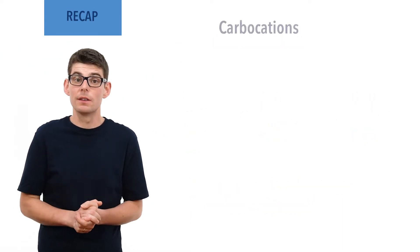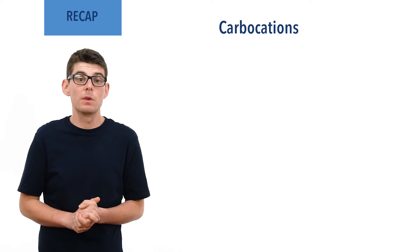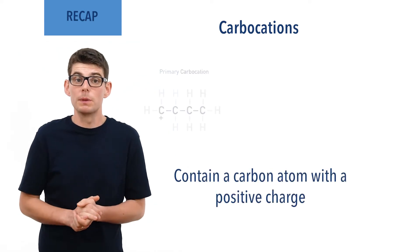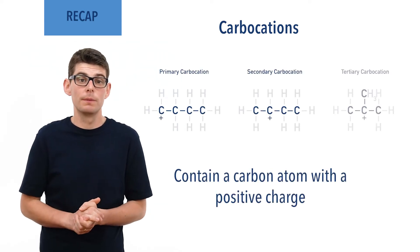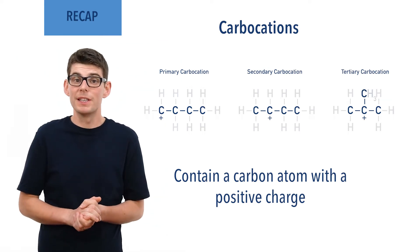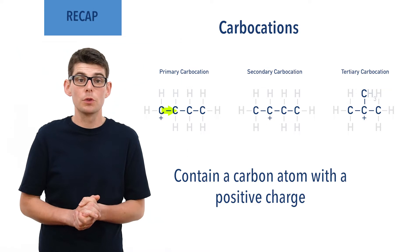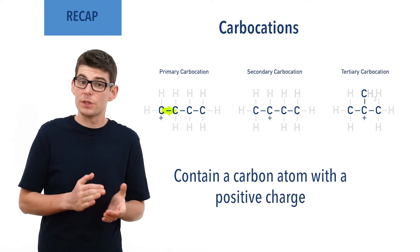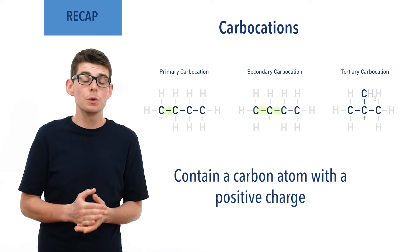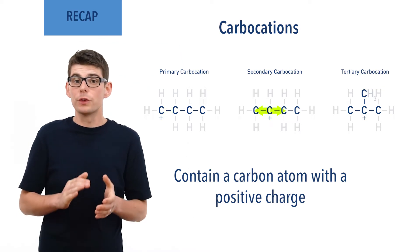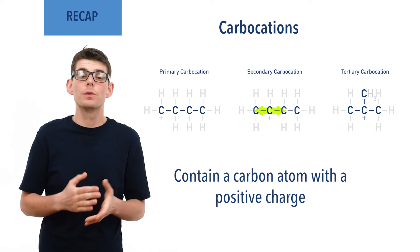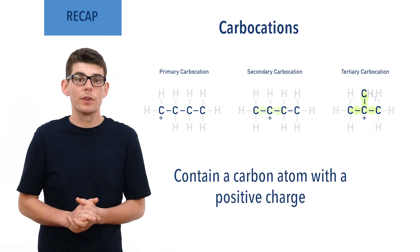A carbocation is an ion that contains a carbon atom with a positive charge. Carbocations can be primary, secondary, or tertiary. For primary carbocations, the positively charged carbon is bonded to one other carbon group. For secondary carbocations, the positively charged carbon is bonded to two other carbon groups. And for tertiary carbocations, the positively charged carbon is bonded to three other carbon groups.